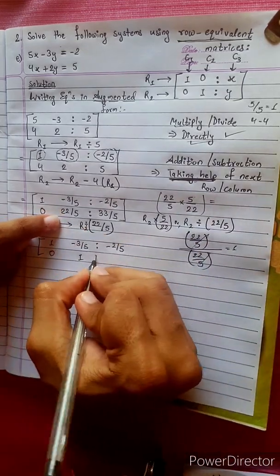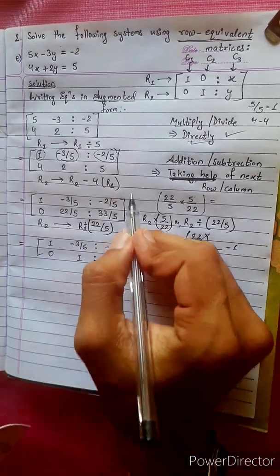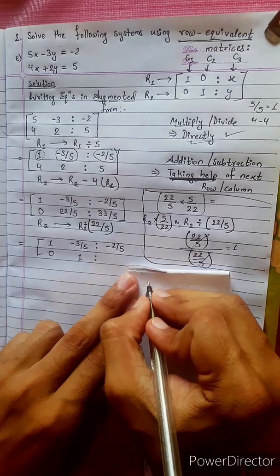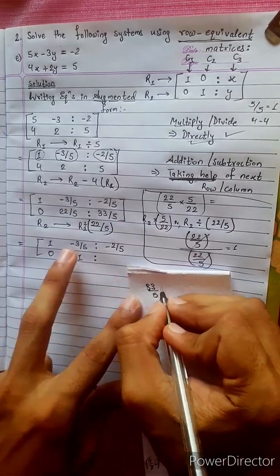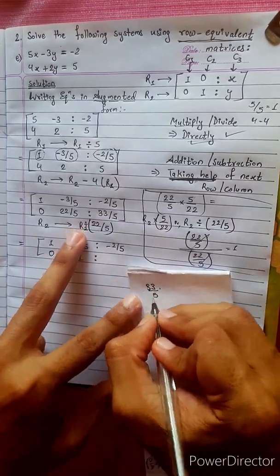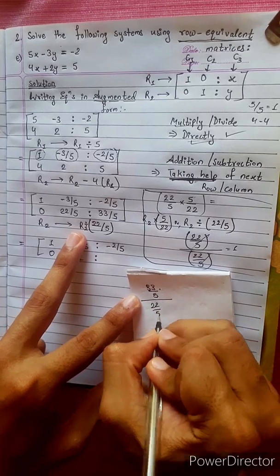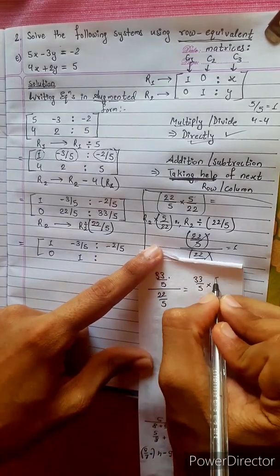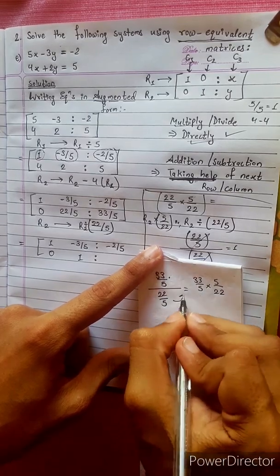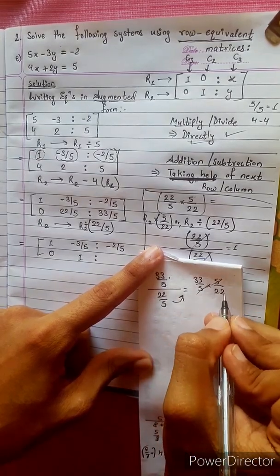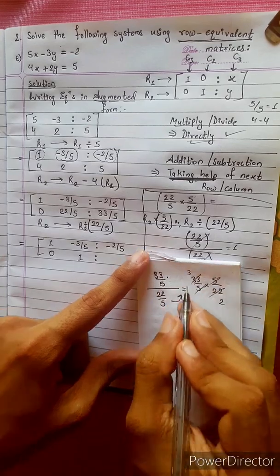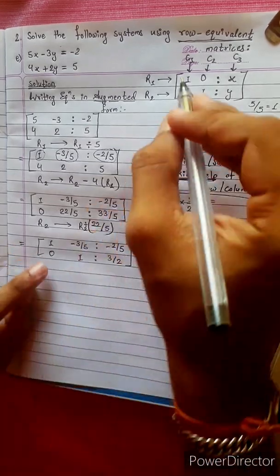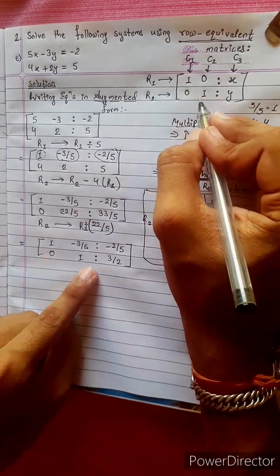This gives 1. Then 33 divided by 5, divided by 22 by 5: take the reciprocal, 5 and 5 cancel, 11 into 22, 11 into 33, giving 3 by 2. So the matrix now has 1, 0, 1, 3 by 2.